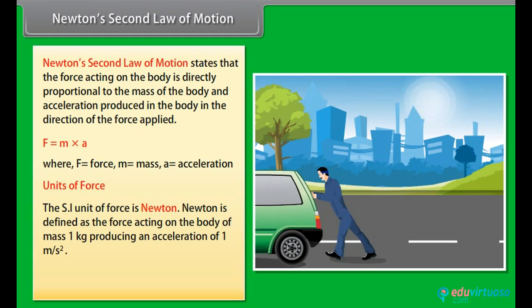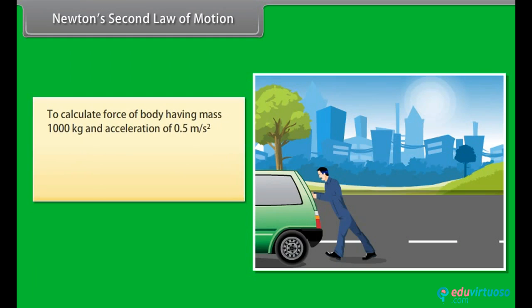To calculate force of body having mass 1000 kg and acceleration of 0.5 meter per second square, then F = 1000 × 0.5, which is equal to 500 Newton or kilogram meter per second square.